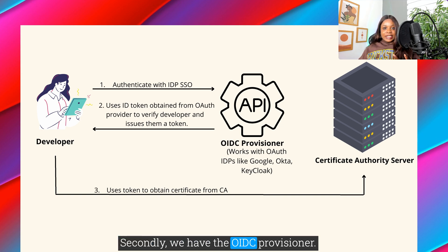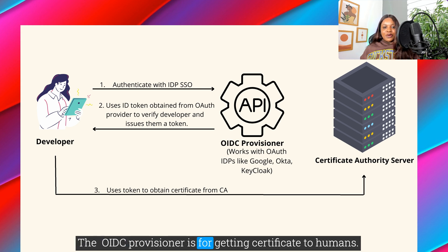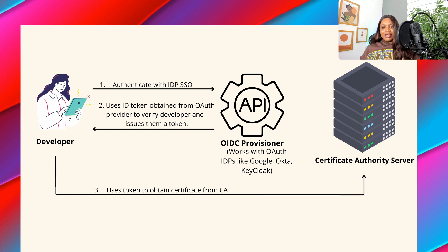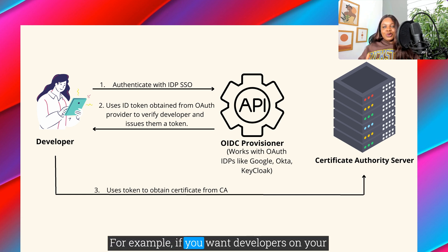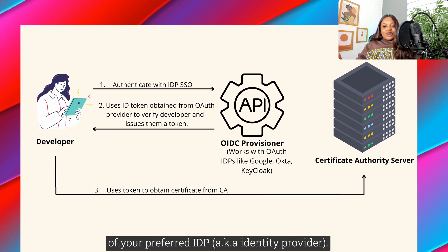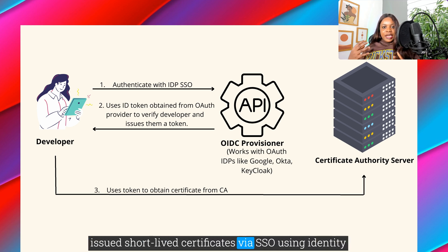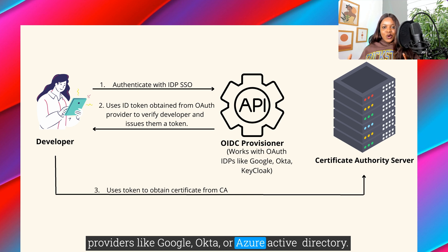Secondly, we have the OIDC provisioner. The OIDC provisioner is for issuing certificates to humans. For example, if you want developers on your team to obtain client or user certificates for accessing internal resources, you would set up an OIDC provisioner that would make use of your preferred identity provider. This would allow developers to be authenticated and issued short-lived certificates via SSO using identity providers like Google, Okta, or Azure Active Directory.